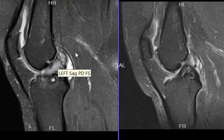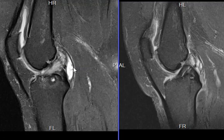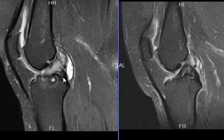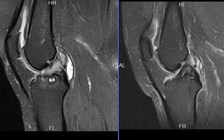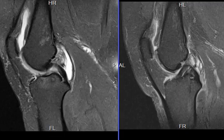This is what they call mucoid degeneration of the ACL. It's not disrupted — it's just expanded with this mucus material, and it fills up the central joint like this. A nice example of mucoid degeneration of the ACL. Oftentimes you also have little erosions where the ACL attaches, sometimes on the femur, sometimes on the tibial side.